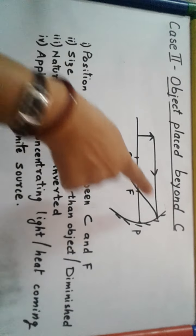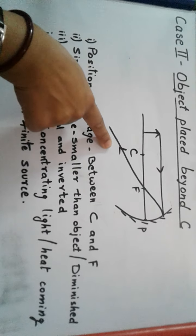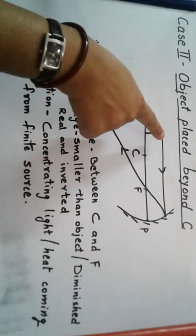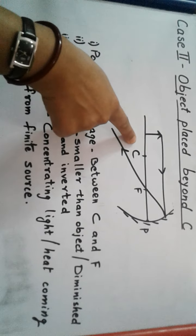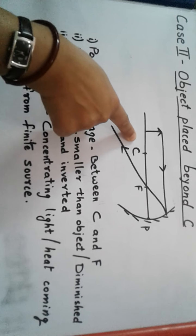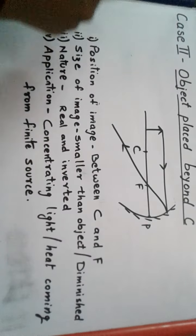Remember, the first ray we are passing is parallel to the principal axis, after reflection passing through the focus. In the first case, we made the ray pass through the focus. In the second case, we made the ray pass through the center of curvature. And the third possibility I am showing you is that it can be passed through the pole also.